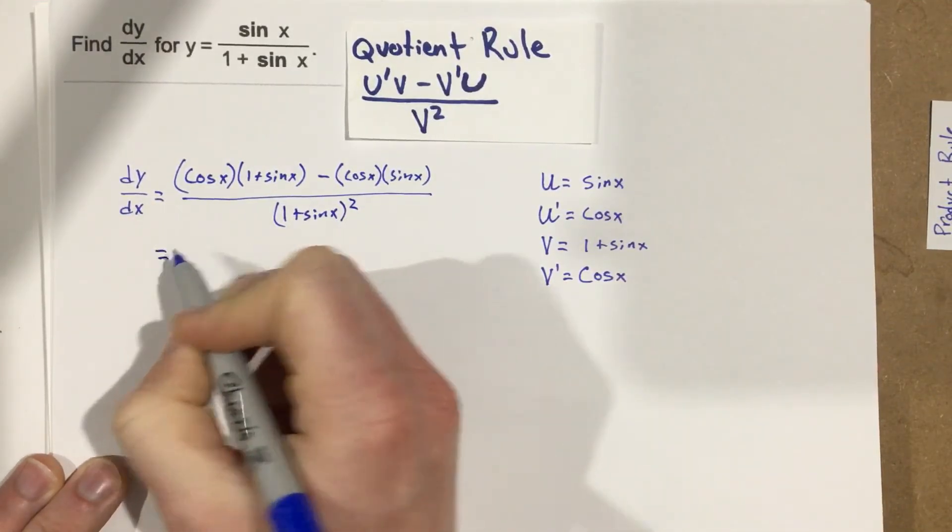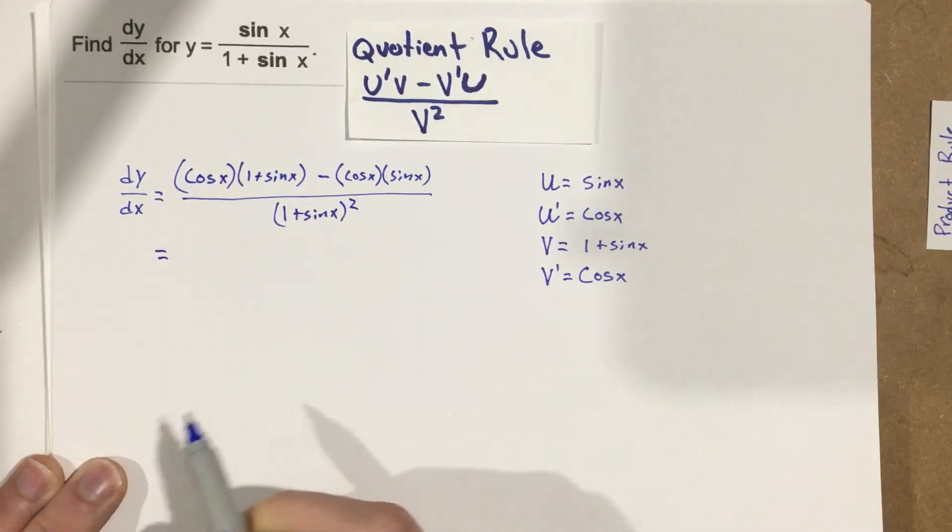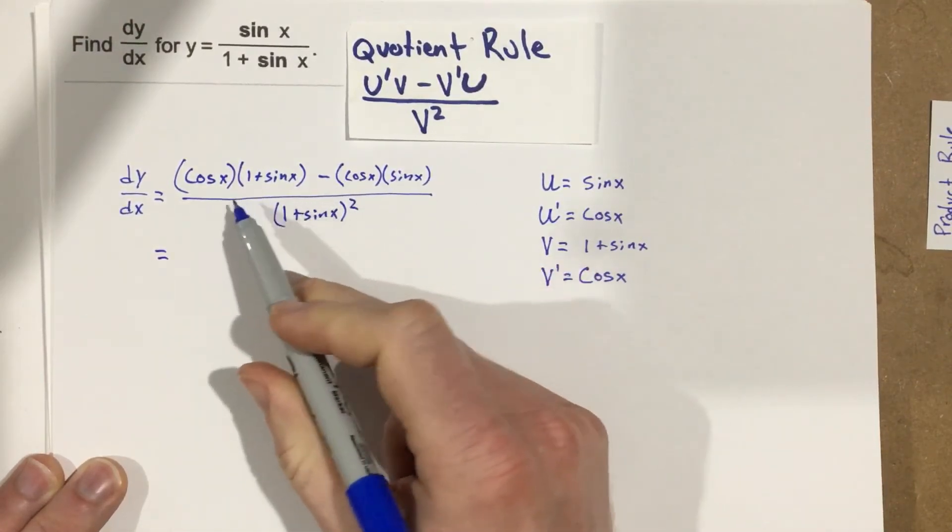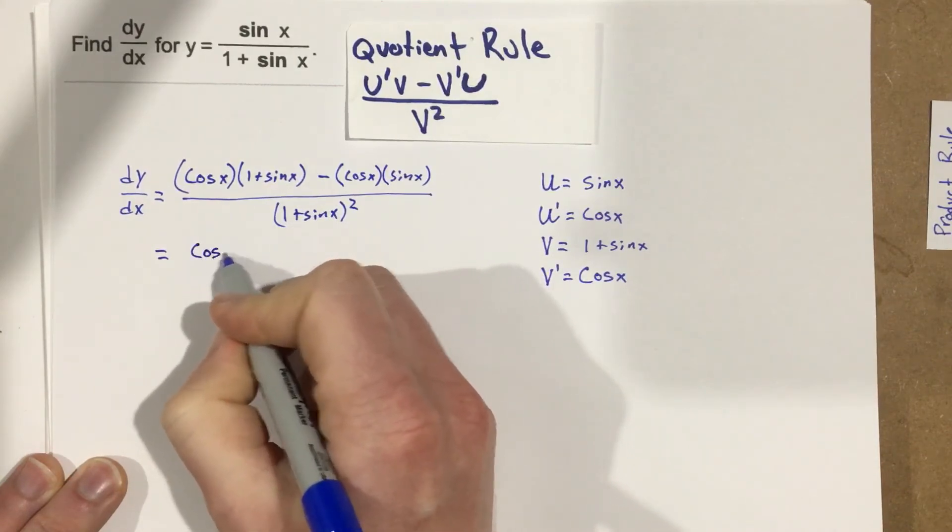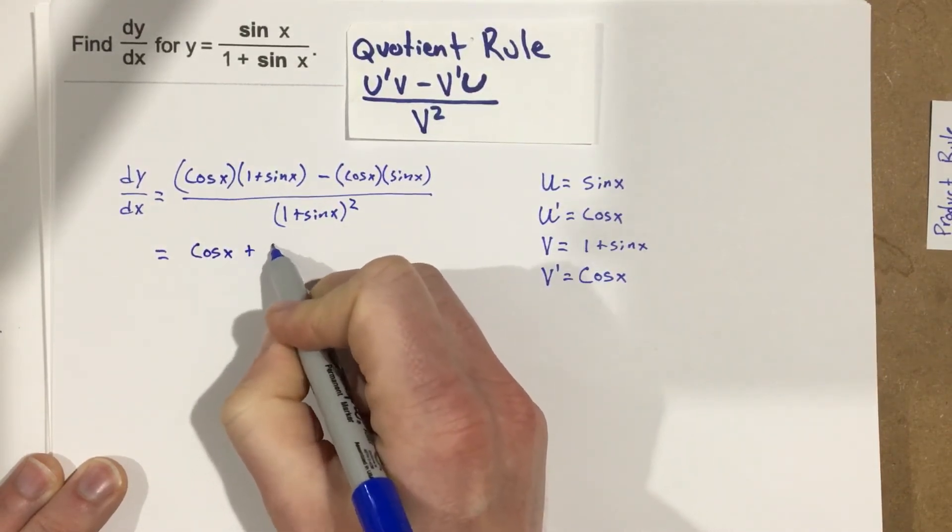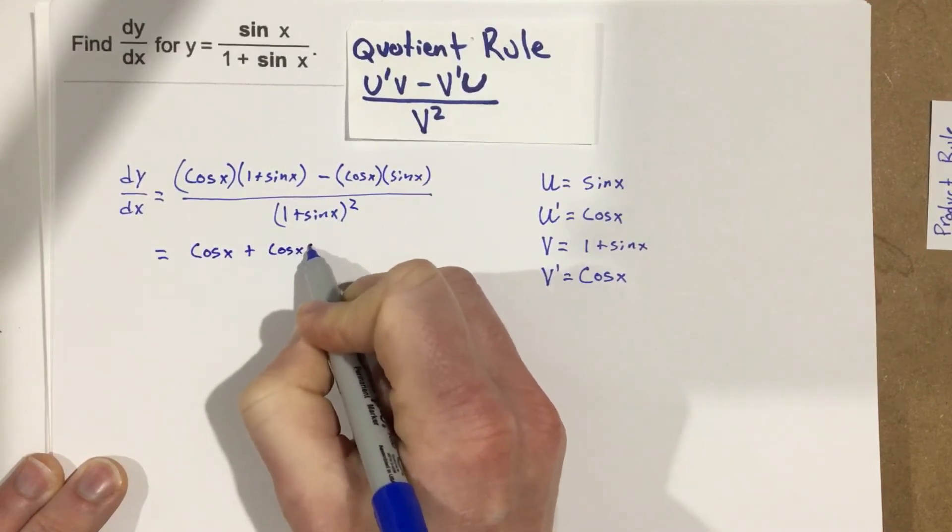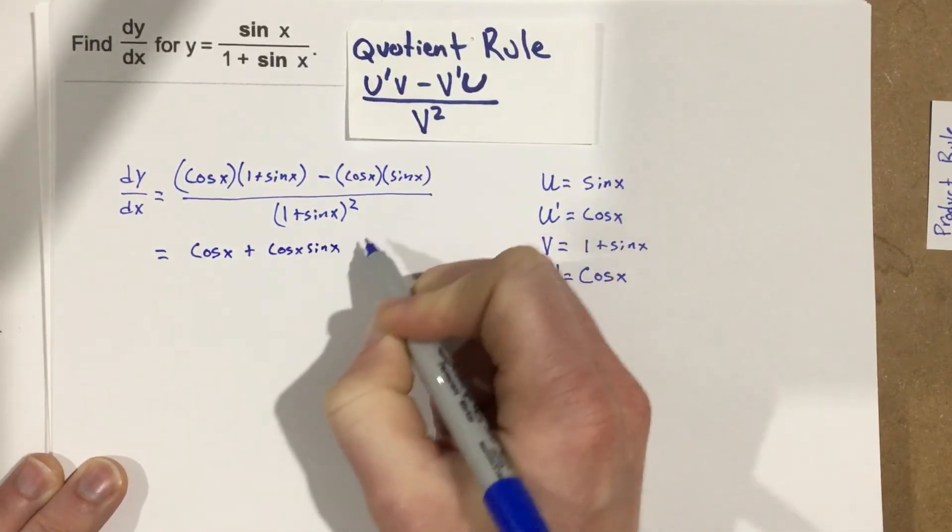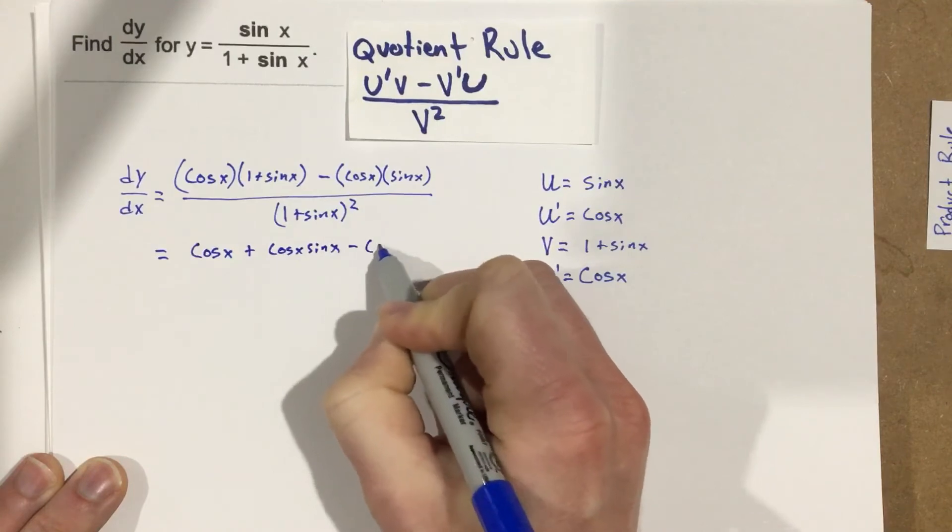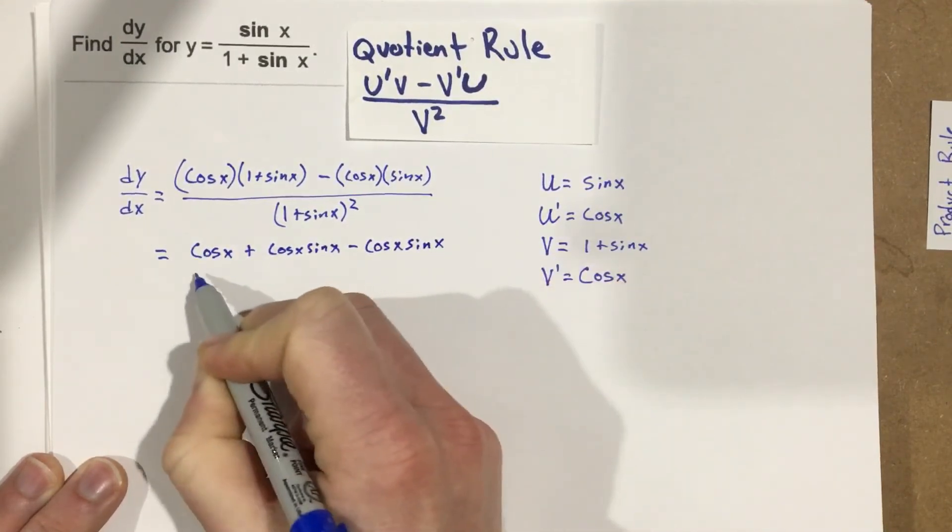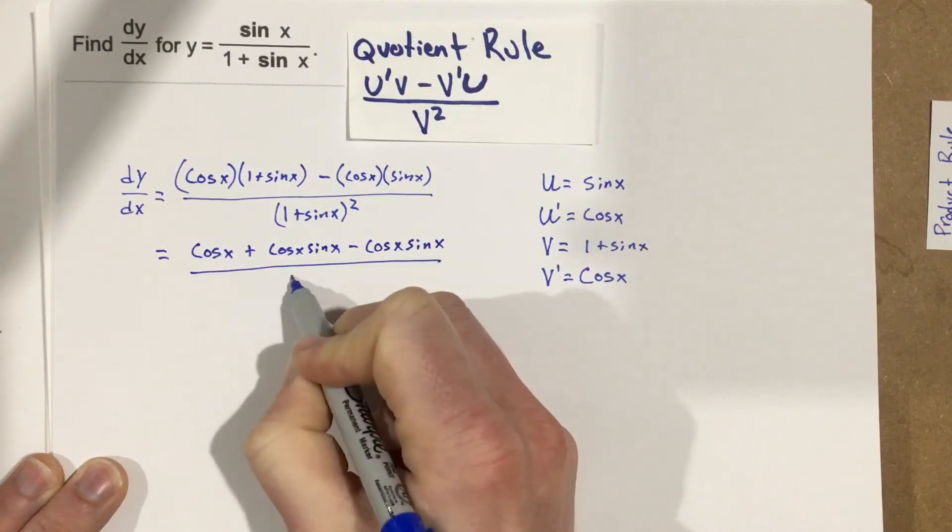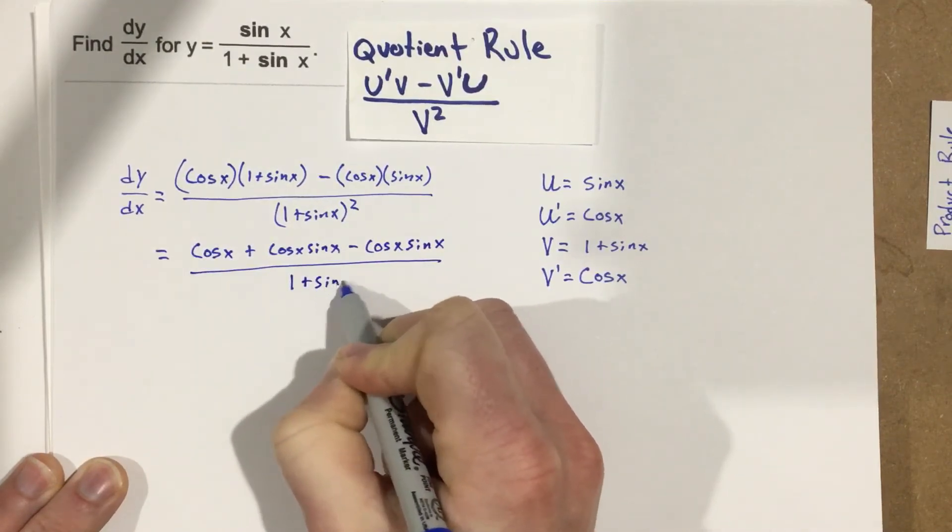Let's go ahead and do some simplifying here. We've got, if I distribute this out, I'll end up with cosine x plus cosine x sine x minus cosine x sine x.